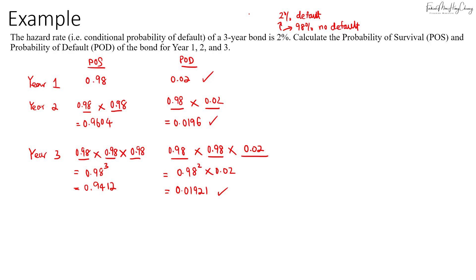For example, we assumed two percent constant every year, but if the hazard rate goes up to five percent starting from year two and continues at five percent through year three, you have to watch out. In year two, the probability of surviving becomes 95 percent and the probability of defaulting becomes five percent.